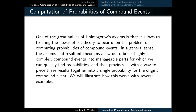One of the great values of Kolmogorov's axioms is that they allow us to bring the power of set theory to bear upon the problem of computing probabilities of compound events. In a general sense, the axioms and resultant theorems allow us to break highly complex compound events into manageable parts for which we can quickly find probabilities, and then provides us with a way to piece these results together into a single probability for the original compound event. We will illustrate how this works with several examples.